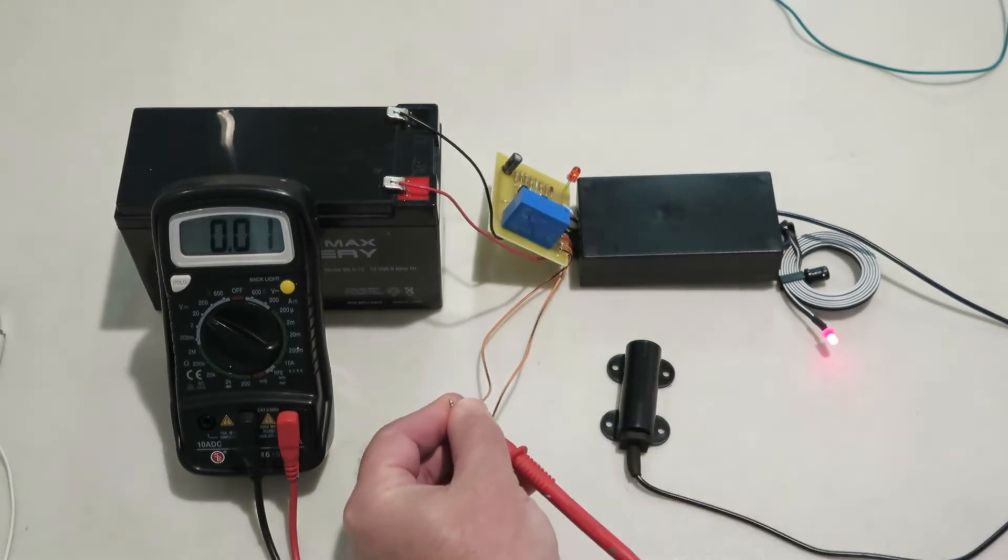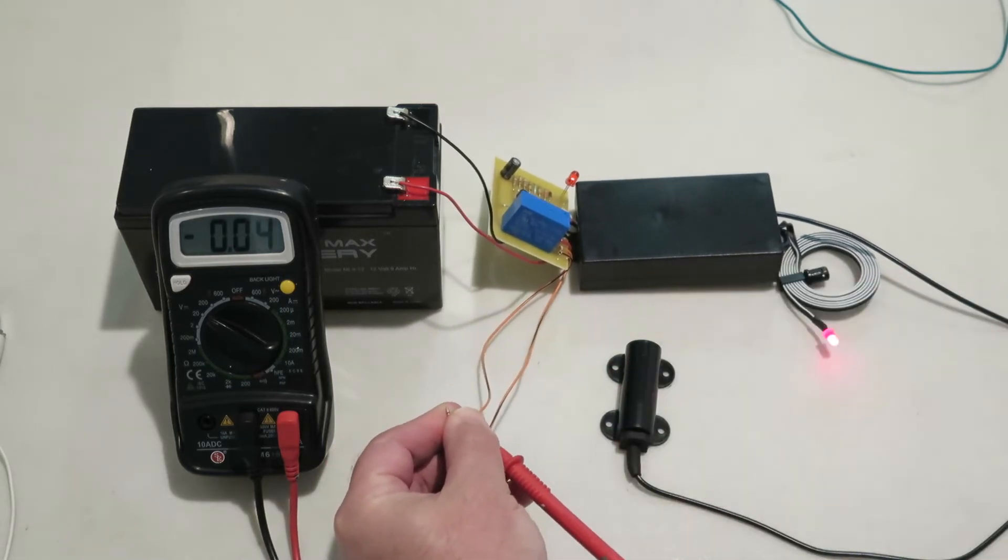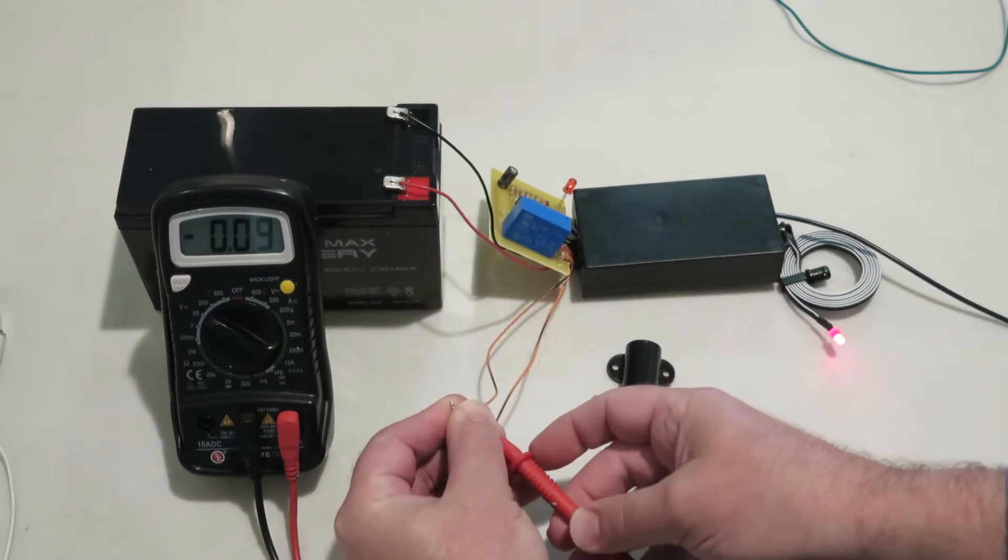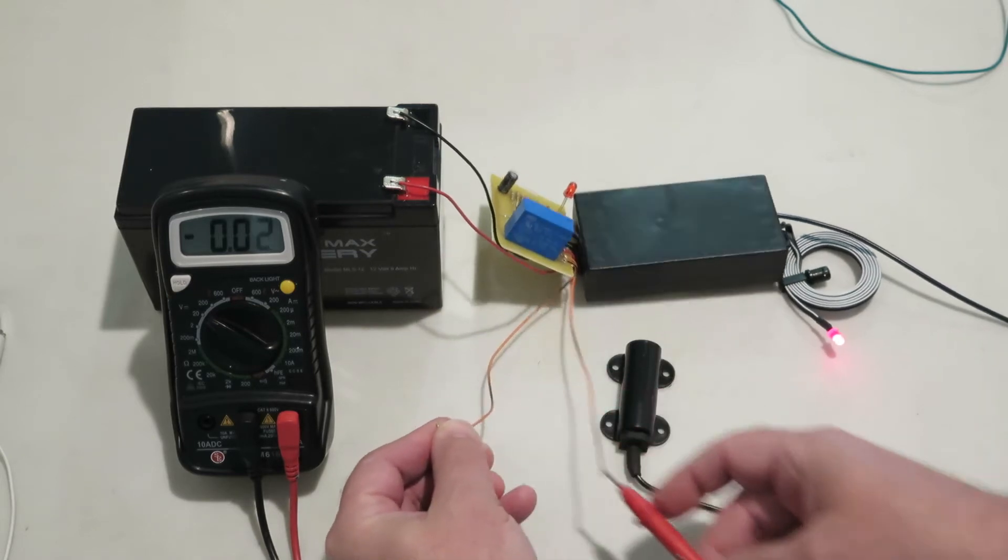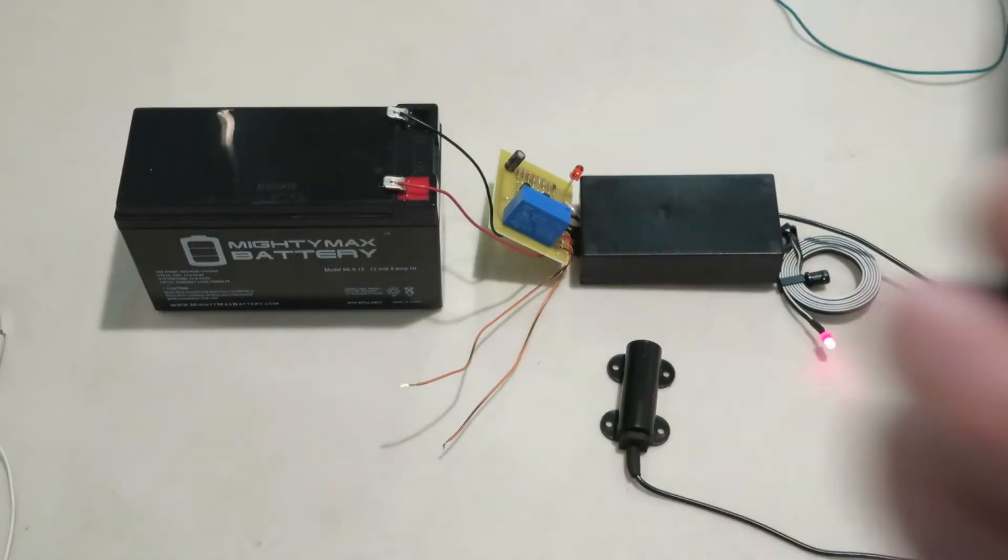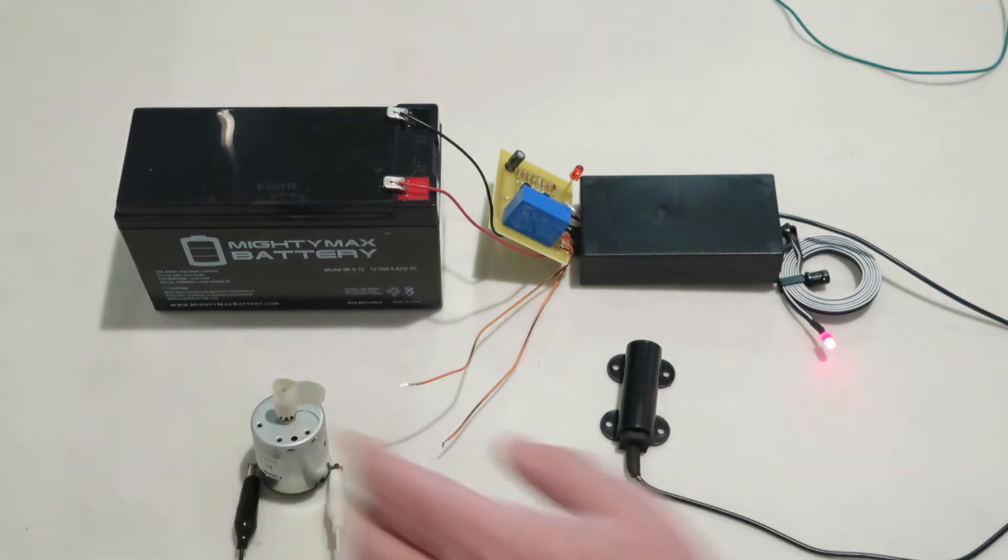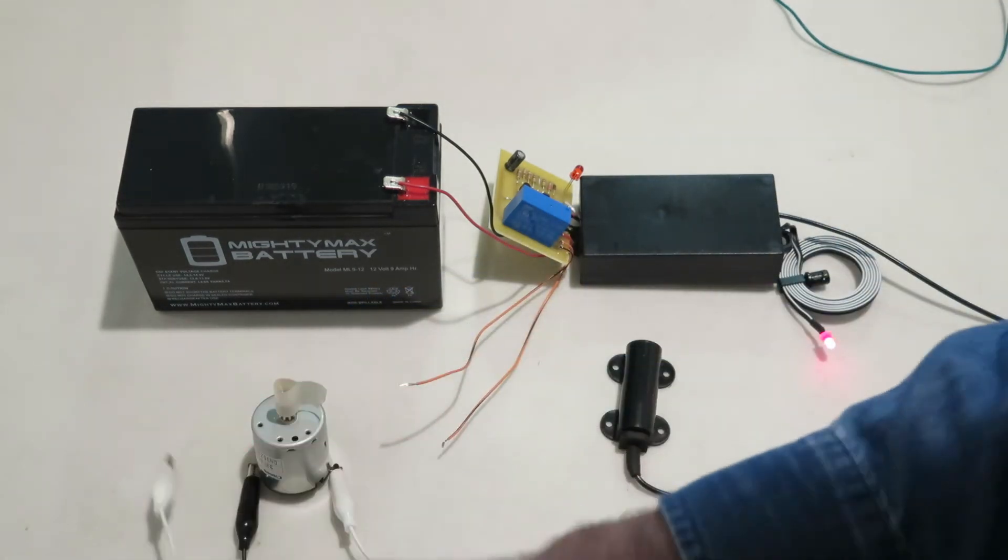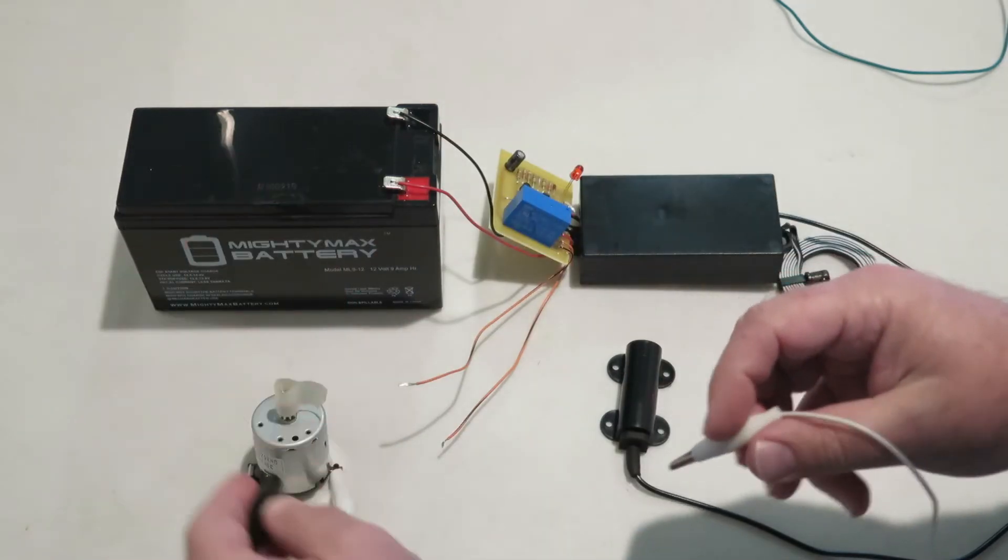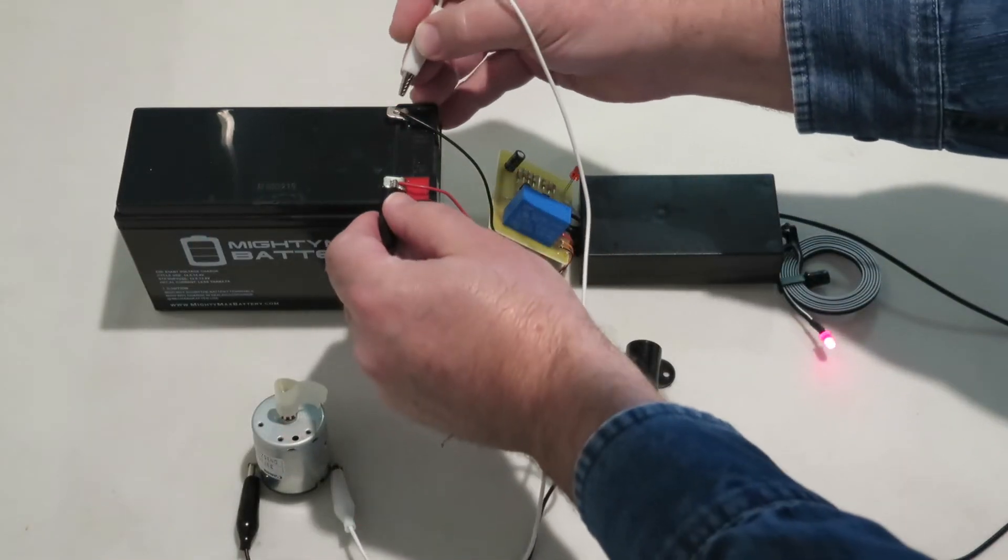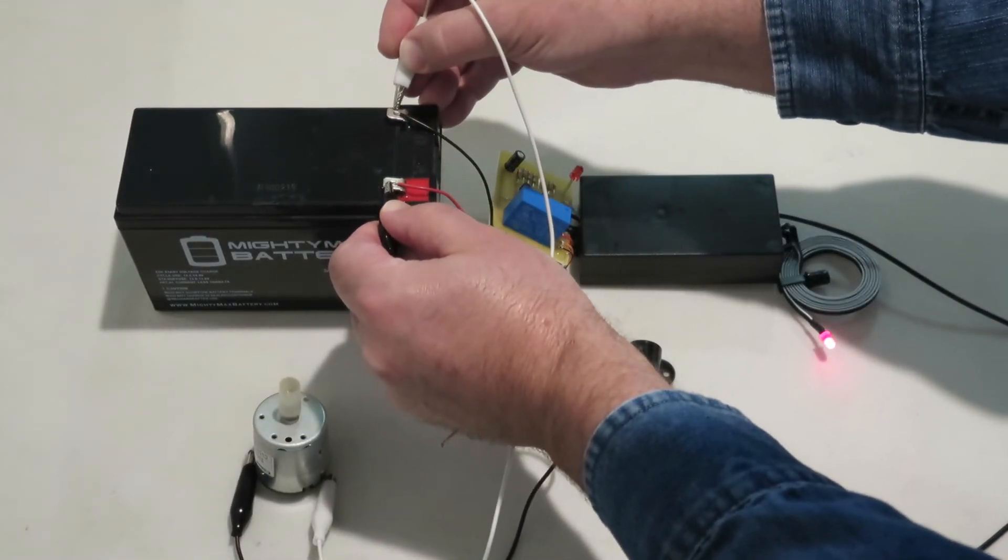Now let's create a circuit with a motor. Here's our motor. Let's power the motor up directly from the battery - 12-volt battery, 12-volt motor, as you can see.